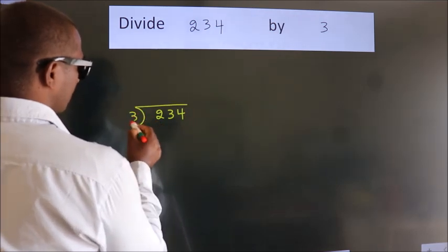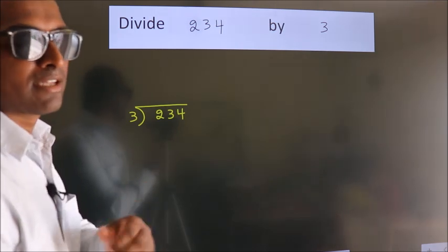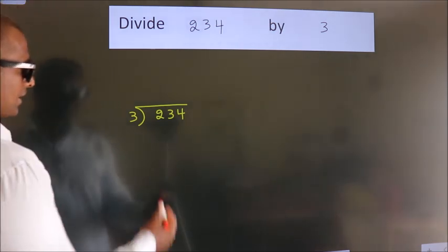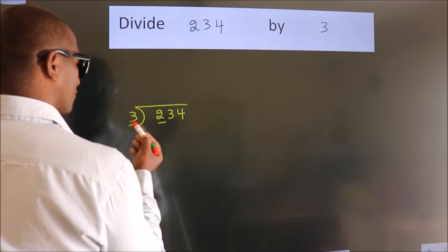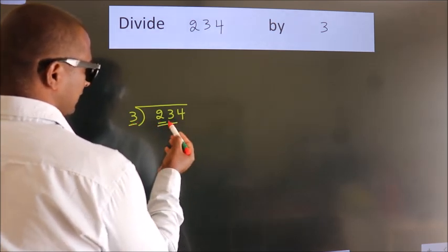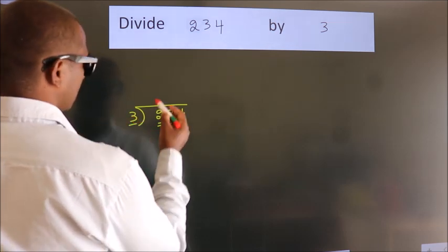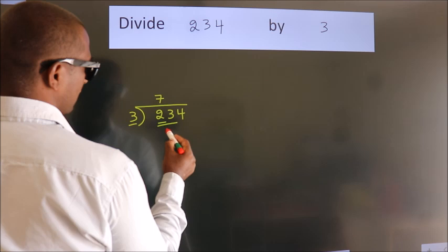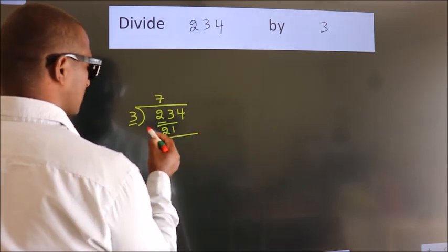This is step 1. Next, we have 2 and 3. Since 2 is smaller than 3, we should take 2 numbers: 23. A number close to 23 in the 3 table is 3×7=21. Now we subtract and get 2.